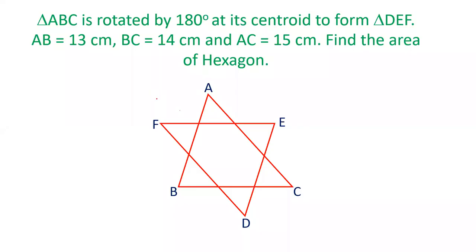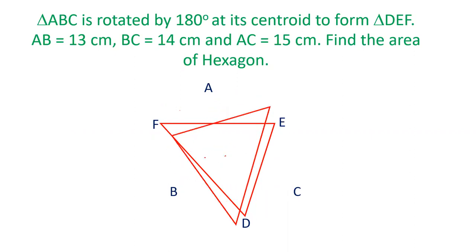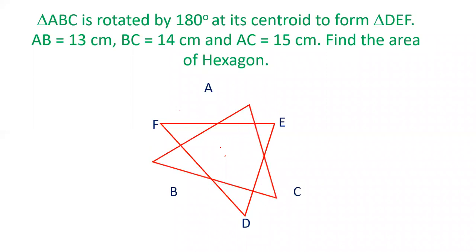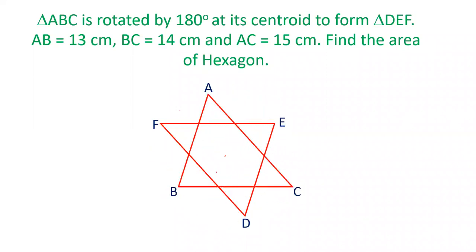Hello friends, welcome to our YouTube channel SSC Selector. In this video I have brought a very interesting question. The question is: there is a triangle ABC with sides AB = 13, BC = 14, AC = 15. This triangle is rotated on its centroid and another triangle DEF is created. So there is a six-pointed star and we have to find out the area of this hexagon or six-pointed star. Now let's see how we can solve this question.